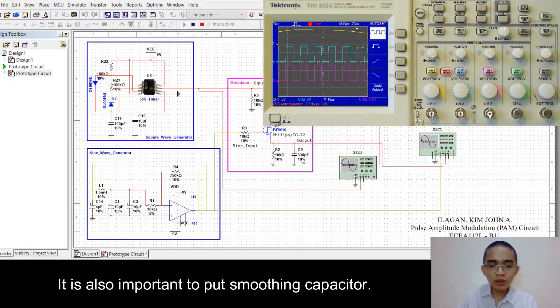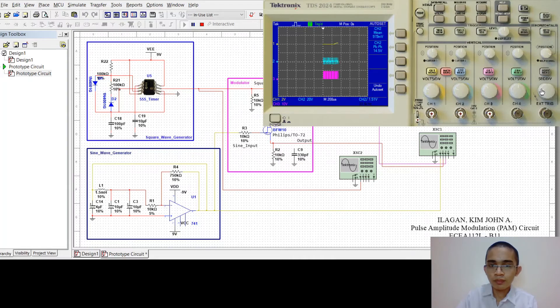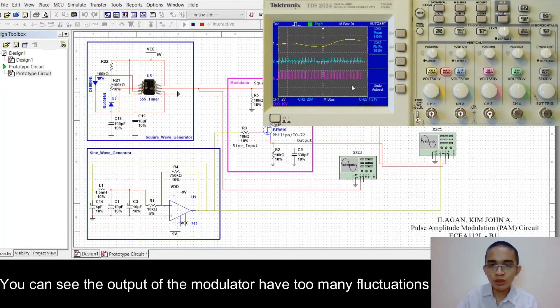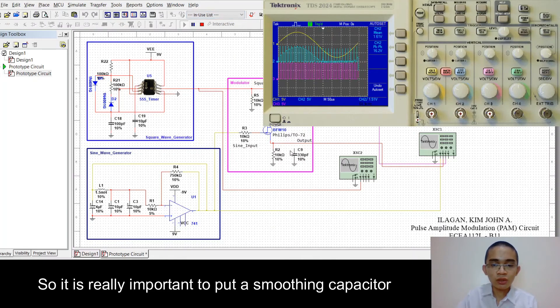It is also important to put a smoothing capacitor to the output because if I remove it, you can see that the output of the modulator has too many fluctuations. So, it is really important to put a smoothing capacitor.